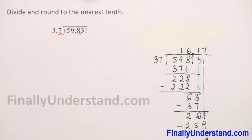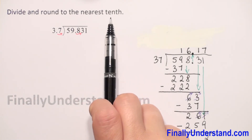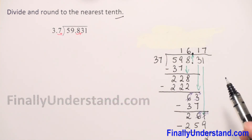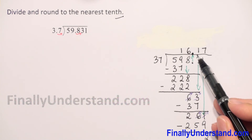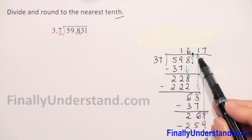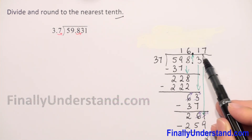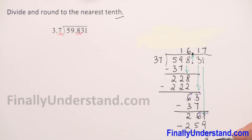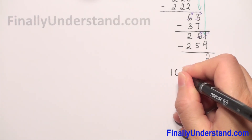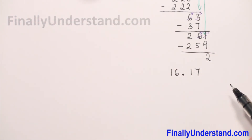Because we need to round our solution to the nearest tenth, we need two digits after the decimal point — the first is the tenths place. We now have exactly two digits after the decimal point, so we don't have to do any more long division. We can rewrite our result as 16.17.